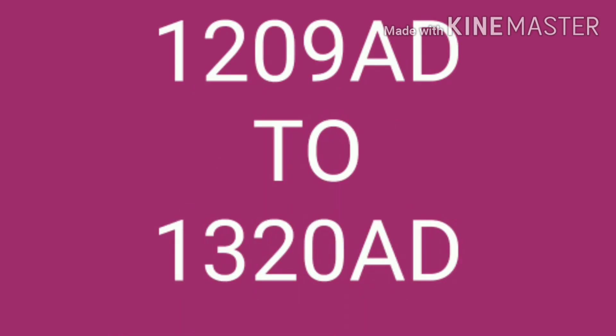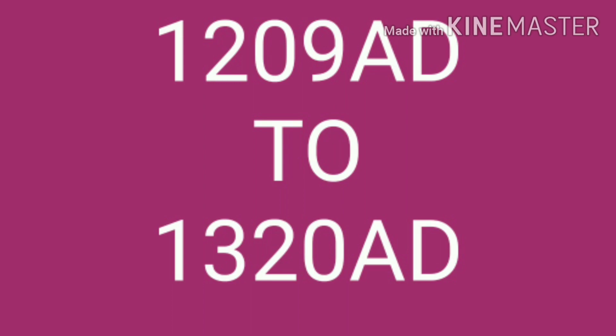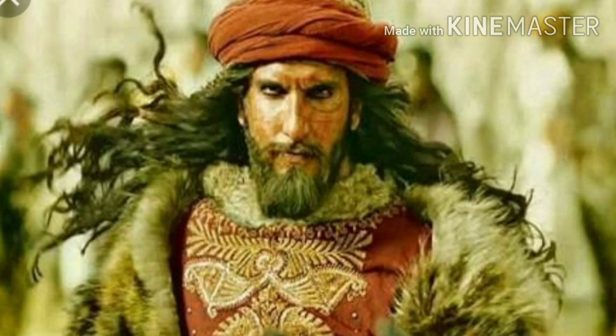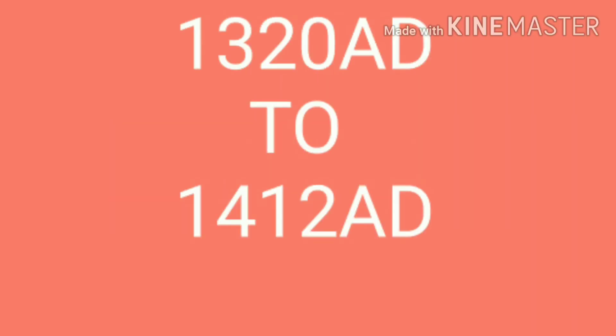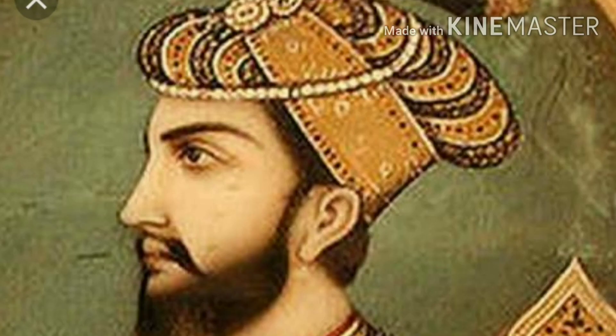The Khiljis (1290 AD to 1320 AD): The Delhi Sultanate was taken over by Jalaluddin Khilji, but he was murdered by Alauddin Khilji, who then took over his position. Khilji ruled most of south India. The Tughlaqs (1320 AD to 1412 AD): Ghiyasuddin Tughlaq brought the Tughlaqs into power. Famous Tughlaqs include Muhammad bin Tughlaq and Feroz Shah Tughlaq.